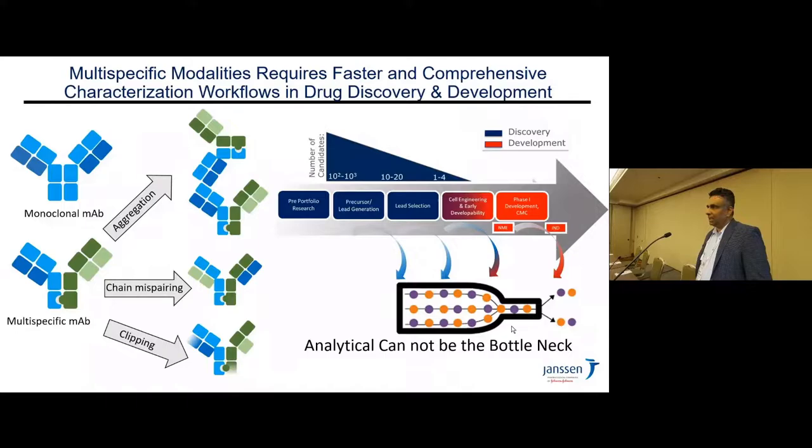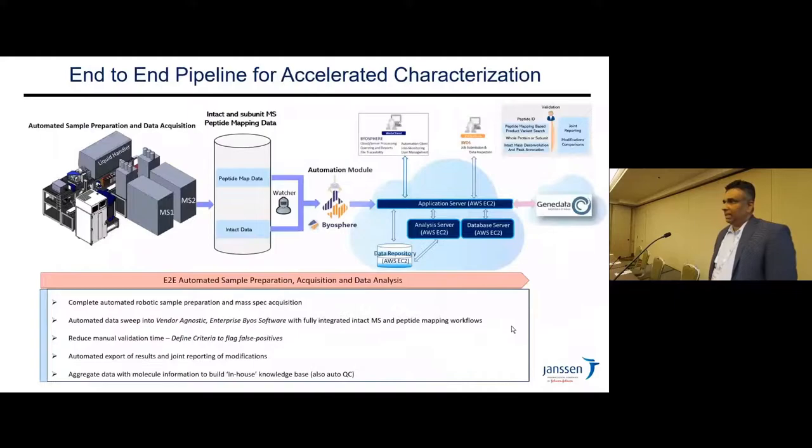We narrow colonies from about a thousand down to a single lead clone that goes into late phase development. Given the scale of both molecules and colonies, analytical cannot be the bottleneck, so we must introduce high throughput methods to de-bottleneck these processes.